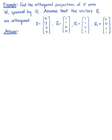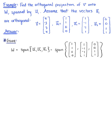Find the orthogonal projection of vector v onto subspace W, spanned by the set of vectors u sub i. Assume that these vectors u sub i are orthogonal. Subspace W is equal to the span of vectors u sub 1, u sub 2, and u sub 3. Since these three vectors are orthogonal, we know that these three vectors in the spanning set form an orthogonal basis for subspace W.